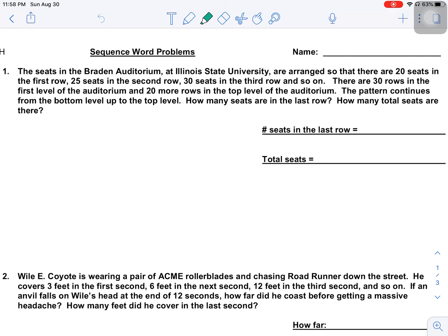The seats at Breeden Auditorium at Illinois State University are arranged so that there are 20 seats in the first row, 25 seats in the second row, 30 seats, and so forth. There are 30 rows in the first level of the auditorium and 20 more rows on the top level. Pattern continues from the bottom level to the top. How many seats are in the last row? And that's where I'm going to stop right here and that's what I want to find first.